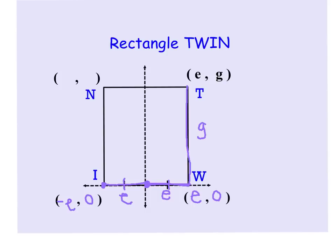Last point we need to get is N, and we know that we're moving out to the left E units, so that's going to be negative E. And then we are going to go up the same distance as this leg over here, so that has to be G units.